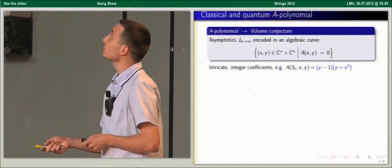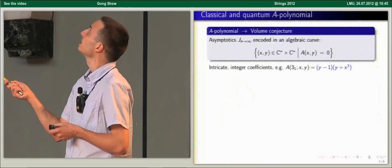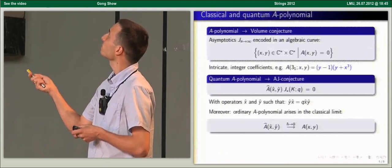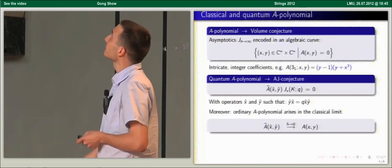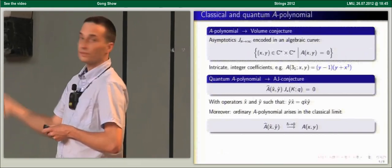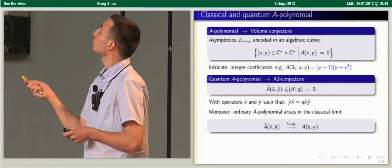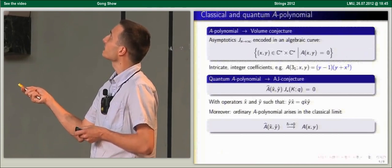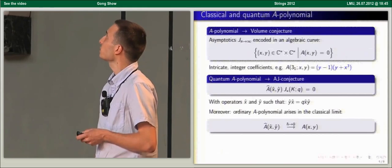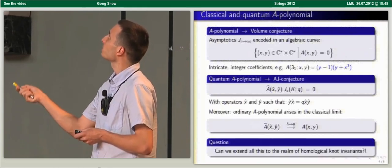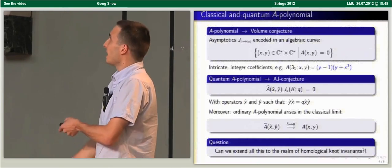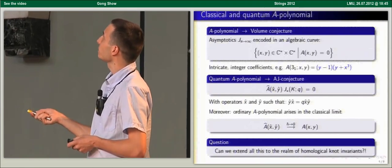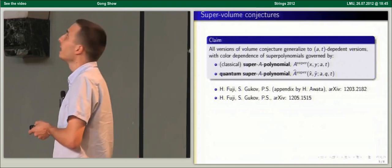It is also interesting to consider the asymptotics of the Jones polynomial as n goes to infinity — this is encoded in an algebraic curve called the A polynomial. This curve can also be quantized, providing recursion relations for Jones polynomial for all n. The quantum A polynomial is expressed in terms of x-hat and y-hat operators satisfying commutation relations, reducing to the ordinary A polynomial when h-bar goes to zero. The question arises whether all properties of the A polynomial and related volume conjectures can be extended to the realm of homological knot invariants, and the answer is yes.